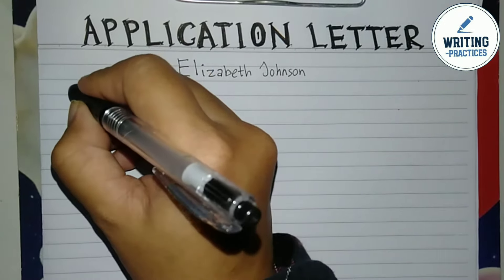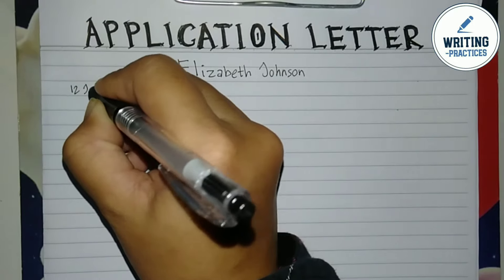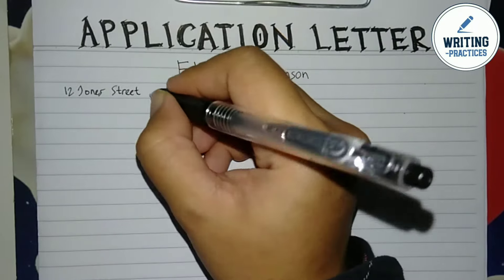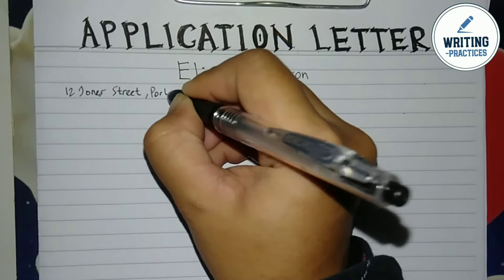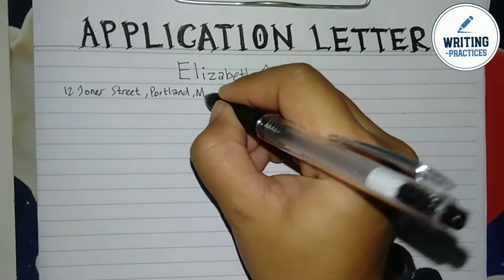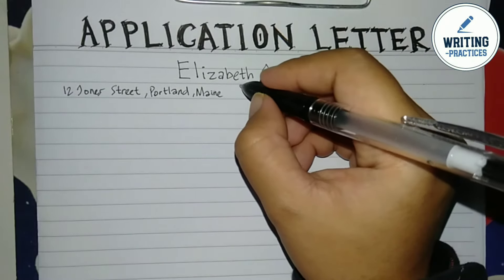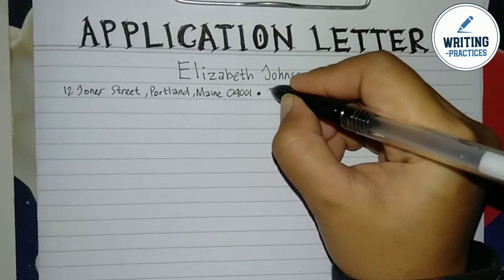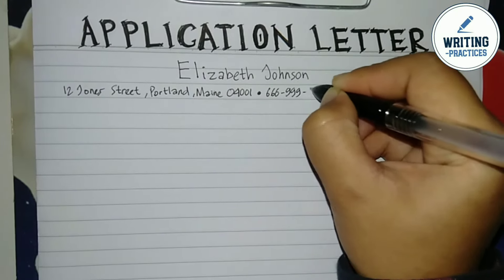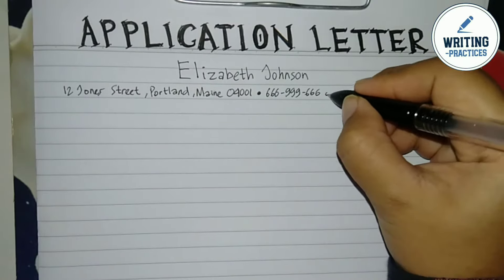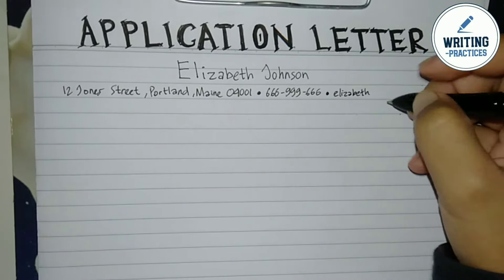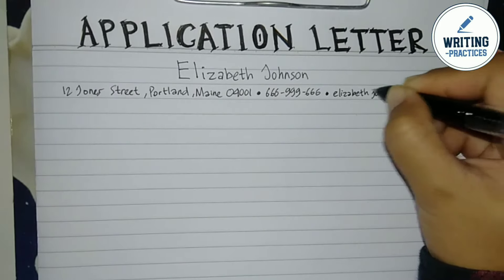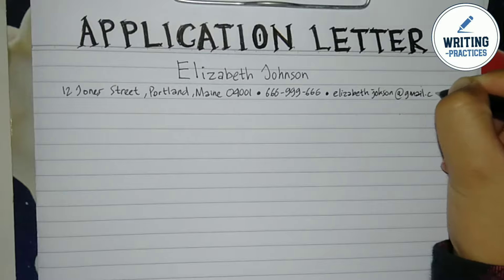Writing Practices will show you how to write an application letter step by step. First of all, write your full name as the header of the letter. And then, write your home address, city, state, zip code, phone number, and your email address. This is a modern style of writing an application letter, so you just put your personal details as the header of the letter.